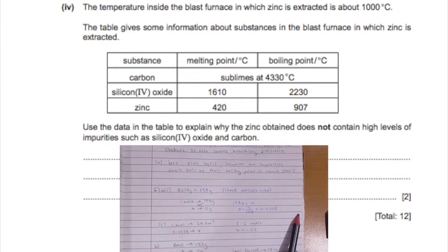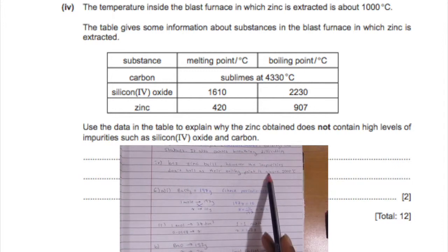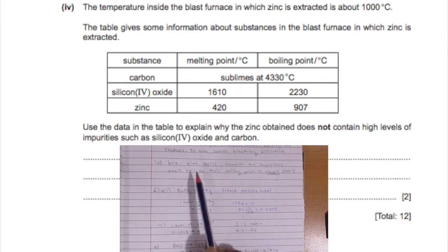Now here they told us that the zinc is extracted about a thousand degrees Celsius. Now there won't be any impurities because the zinc will end up boiling, however the impurities have a boiling point much larger than a thousand, so they won't boil with the zinc.